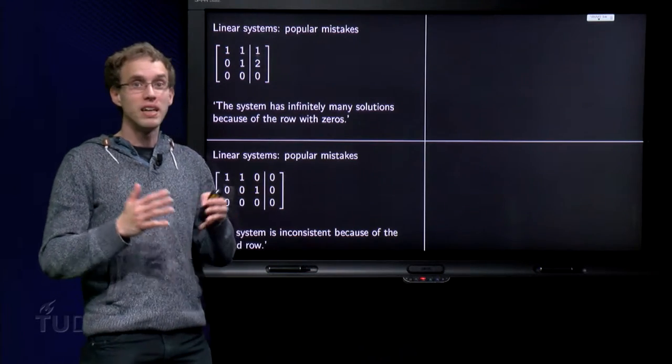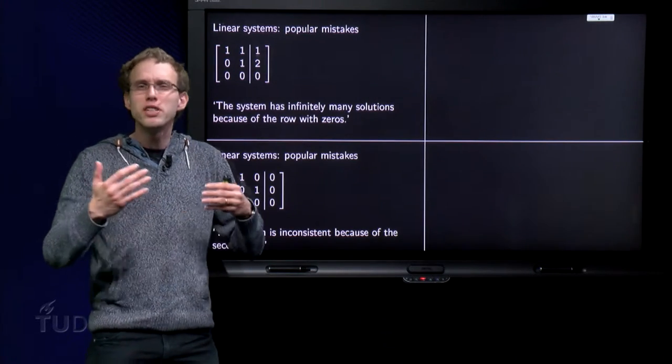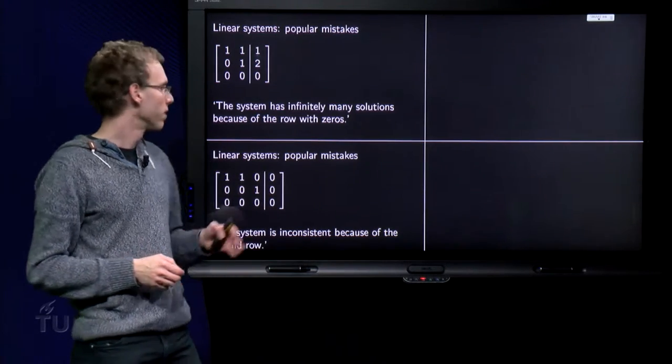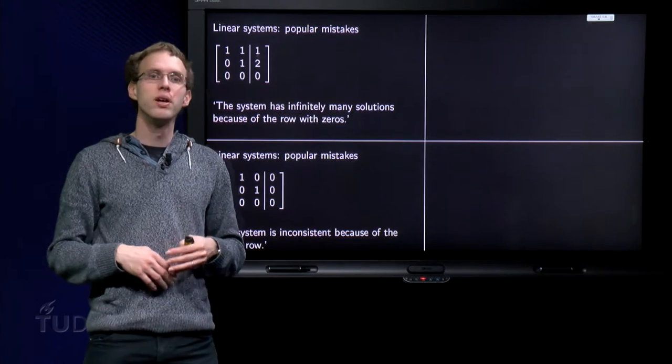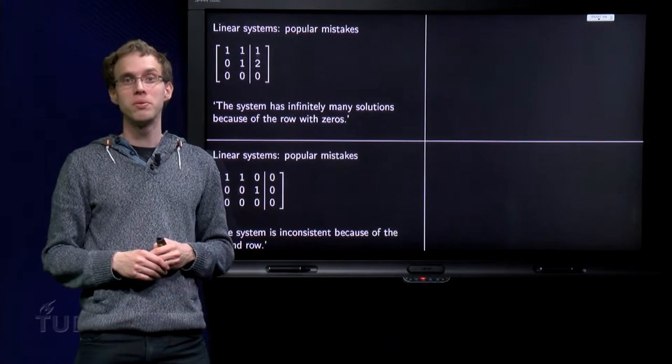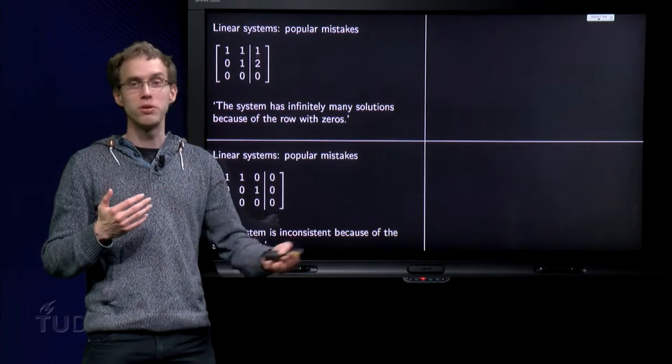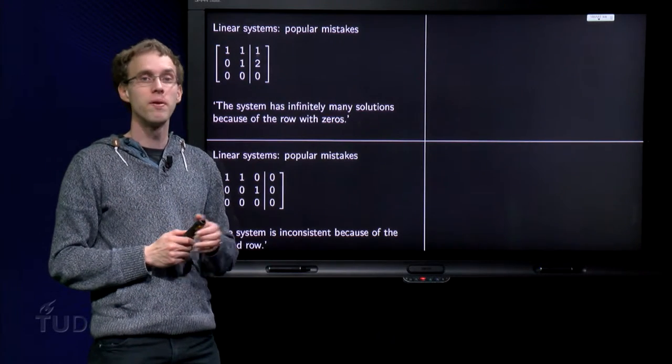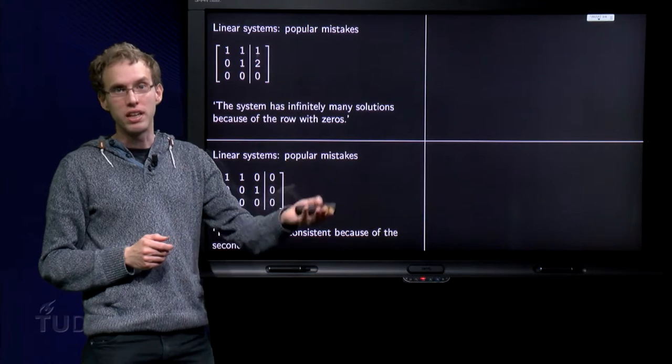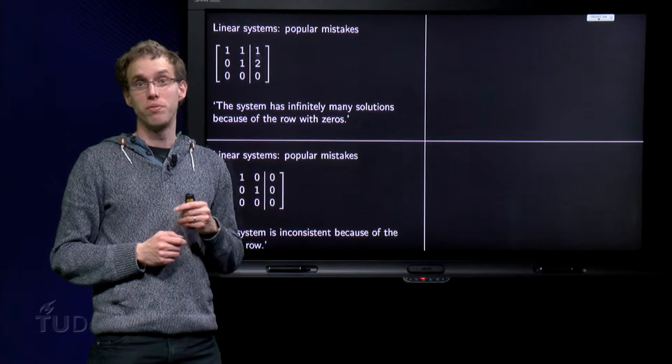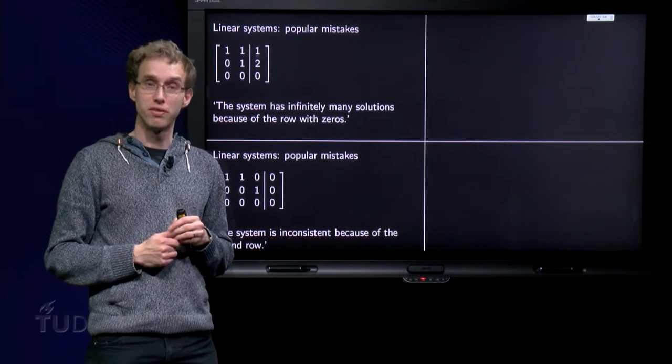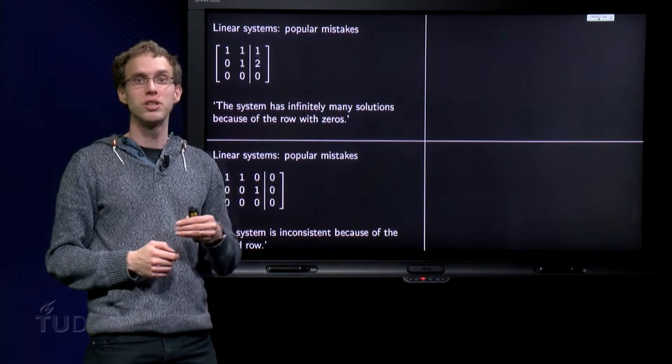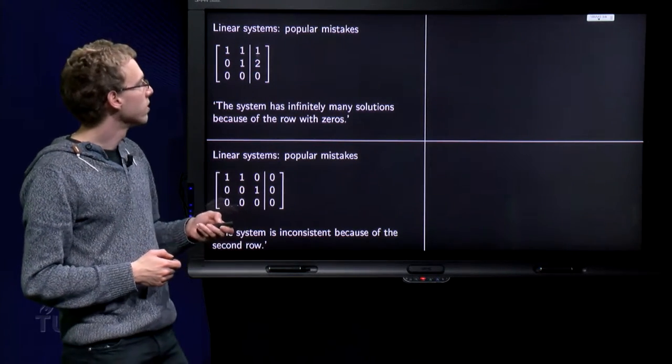So then the next part. It's not so much about the mistake, but about possible choices you can make for this system. We have free variables, and you might wonder which variables can we choose free, and which can we choose to be not free? Well, you know that you can choose the variables without a pivot free. And the question is, is that the only possible choice?